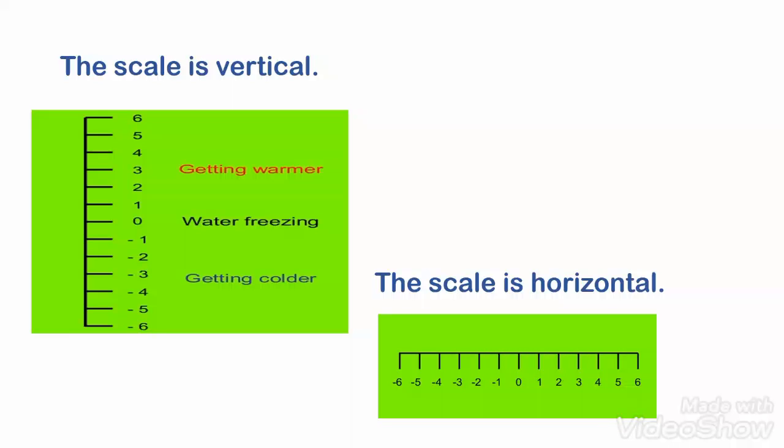Recording temperatures below freezing is one very important use of negative numbers. You can show positive and negative numbers on a number line with 0 in the center.